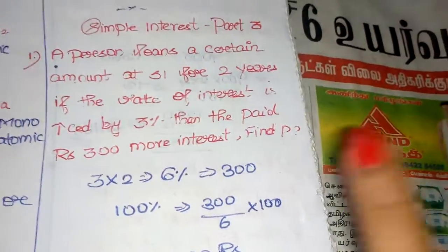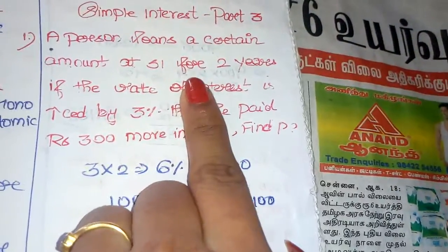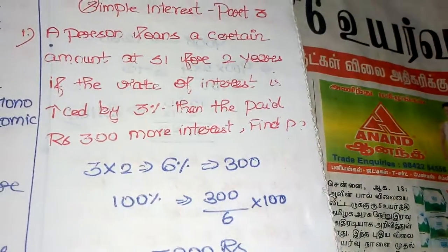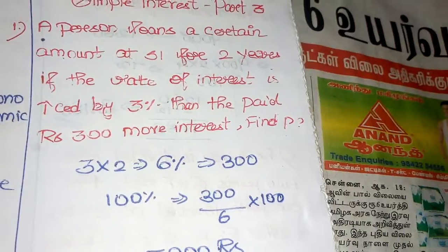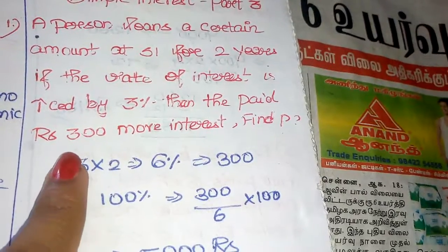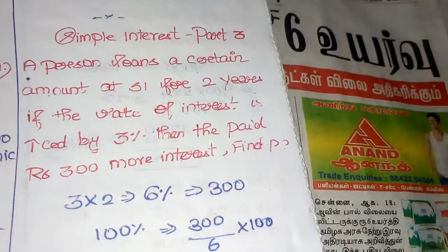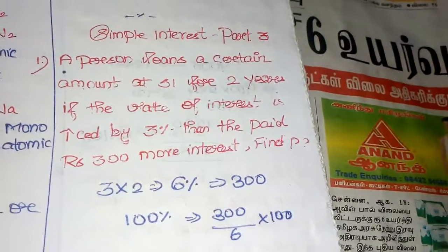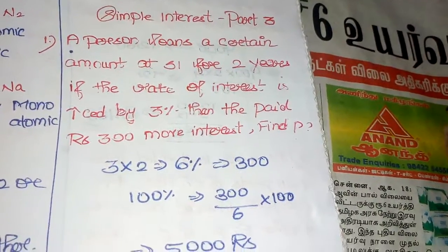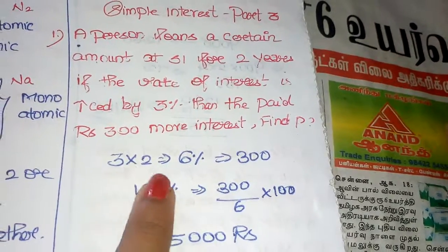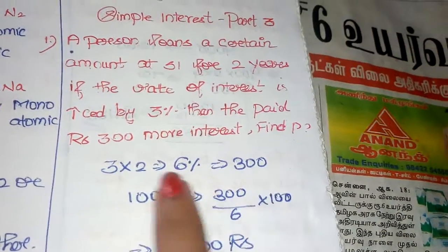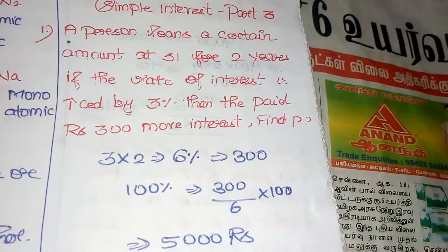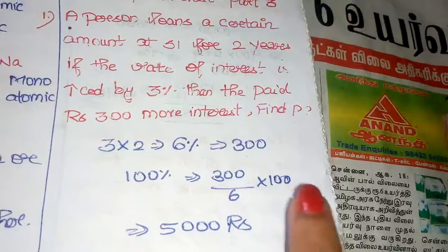First question: A person loans a certain amount at simple interest for two years. If the rate of interest is increased by 3 percentage, the person pays ₹300 more as interest — that is, interest increases by ₹300. To find the principal: multiply time and rate of interest. 6 percentage equals ₹300 more paid.